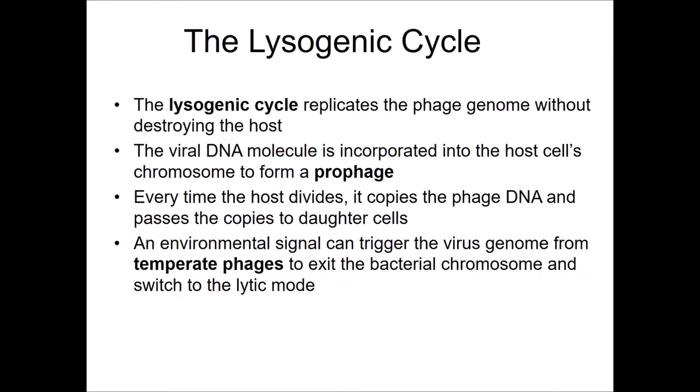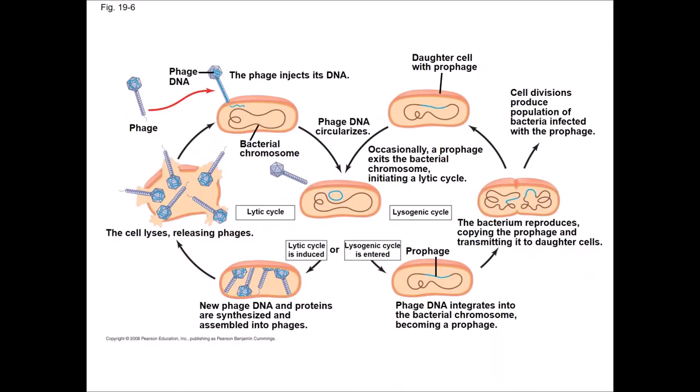In the lysogenic cycle, the phage genome is replicated without destroying the host cell. Instead, the viral DNA molecule is incorporated into the host cell's chromosome to form a prophage. Every time the host divides, it copies the phage DNA and passes the copies to its daughter cells. An environmental trigger signal can cause the virus genome to exit the bacterial chromosome and switch into the lytic mode.